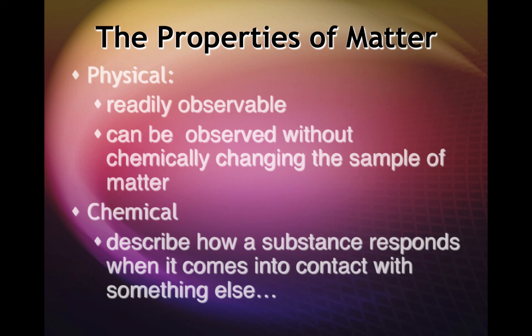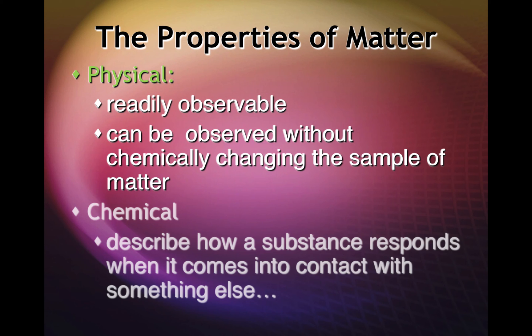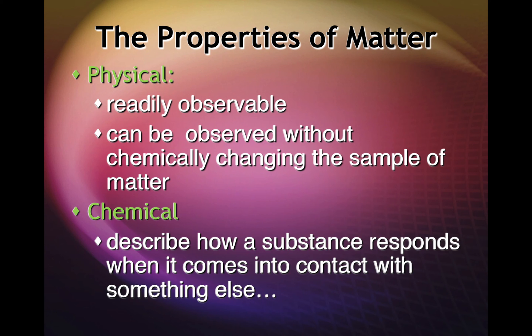The properties of matter. There are two types of properties of matter. There are physical properties, which are readily observable and can be observed without chemically changing the sample of matter. Chemical properties, on the other hand, describe how a substance responds when it comes into contact with something else.